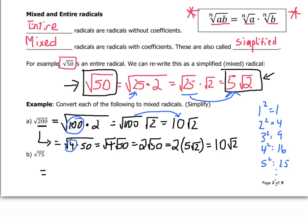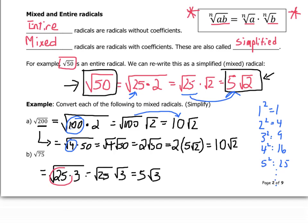For question B, the square root of 75 can be broken down into the square root of 25 times 3, which is root 25 times root 3, which is 5 root 3. I used 25 because it is one of my perfect squares.